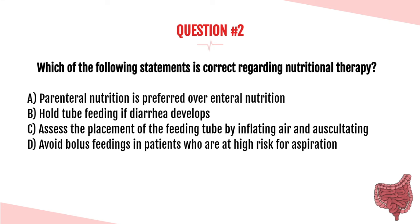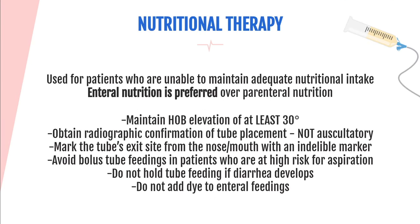The answer is D — avoid bolus feedings in patients who are at high risk for aspiration. Nutritional therapy is used for patients unable to maintain adequate nutritional intake. Enteral nutrition, meaning nutrition going into the stomach, is preferred over parenteral nutrition (like TPN or PPN which goes into the vein). Enteral nutrition is associated with fewer complications, maintains gut function and gut anabolism, and is less costly.